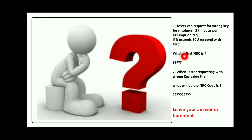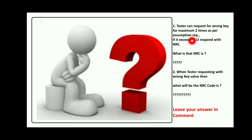Now here are two questions for you. The assumption requirement here is that the tester can request with the wrong key for a maximum of two times — though in some projects it may be one time, three times, or five times. In this example I'm using the assumption of a maximum of two attempts. If that limit is exceeded, the ECU will respond with an NRC.